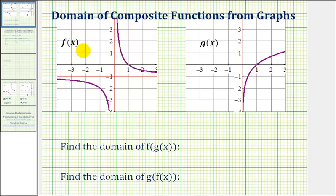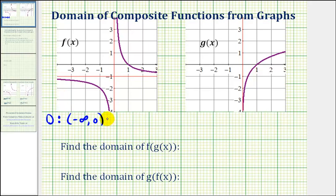Let's start by determining the domain and range of f of x and g of x. Notice that we have a vertical asymptote at x equals zero, which means the domain will not include zero for f of x. So we'll have the open interval from negative infinity to zero and the open interval from zero to infinity.